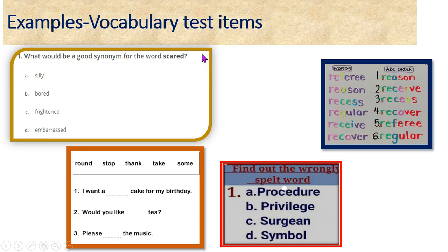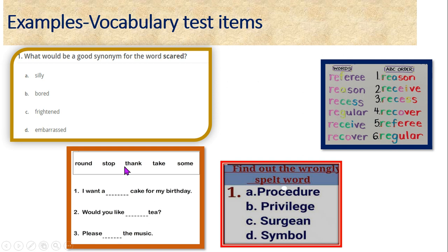Now let us look at the sample vocabulary test items. For example, what would be a good synonym for the word 'scaled'? The options given are: round cake, thank cake, stop cake, take cake, some cake.